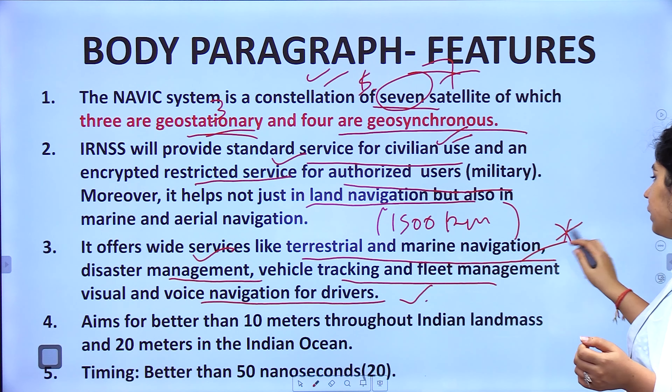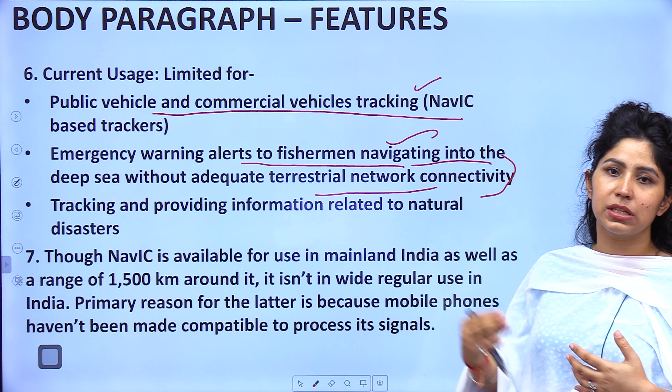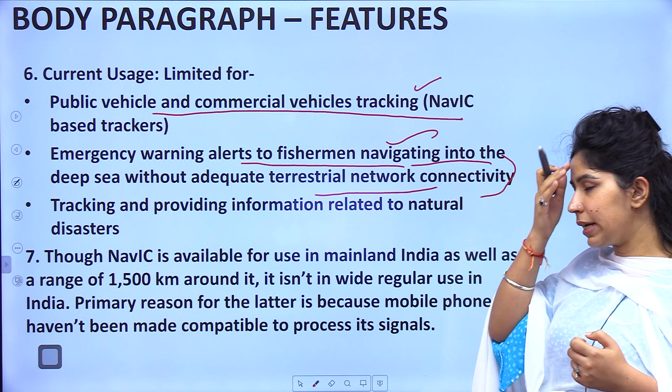NAVIC offers wide services including terrestrial and marine navigation, disaster management, and disaster warnings. For example, warnings can be issued to fishermen in the deep sea if a cyclone is approaching, directing them back to land. It also supports vehicle tracking, fleet management, and visual and voice navigation for drivers. It aims for better than 10 metres accuracy throughout the Indian landmass and 20 metres in the Indian Ocean. Timing will be better than 50 nanoseconds.